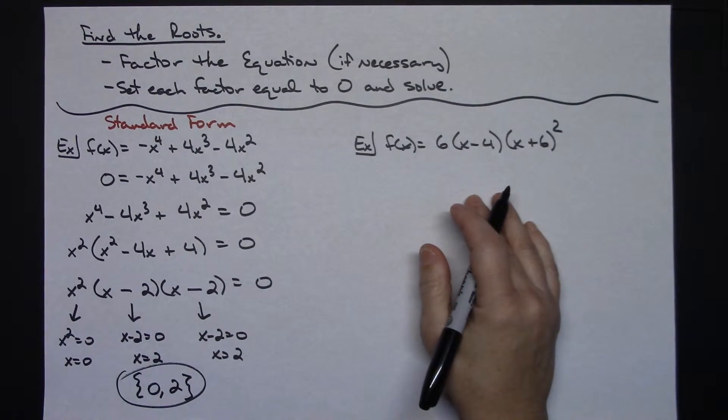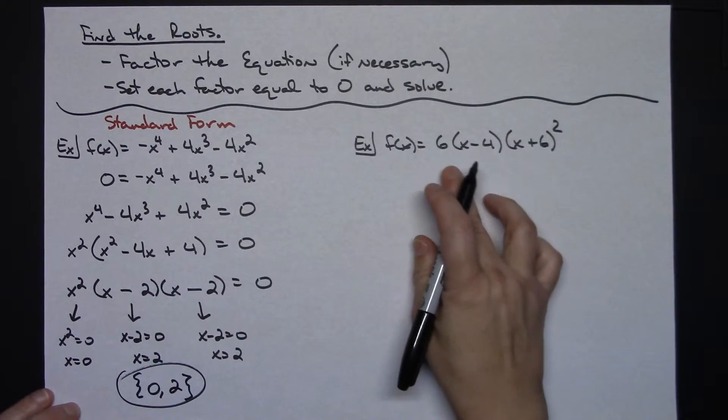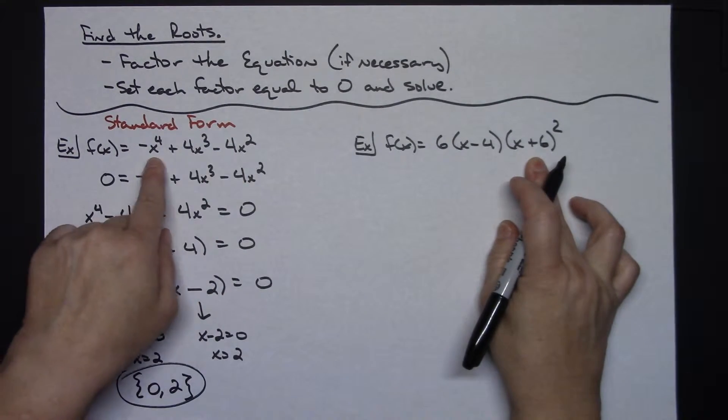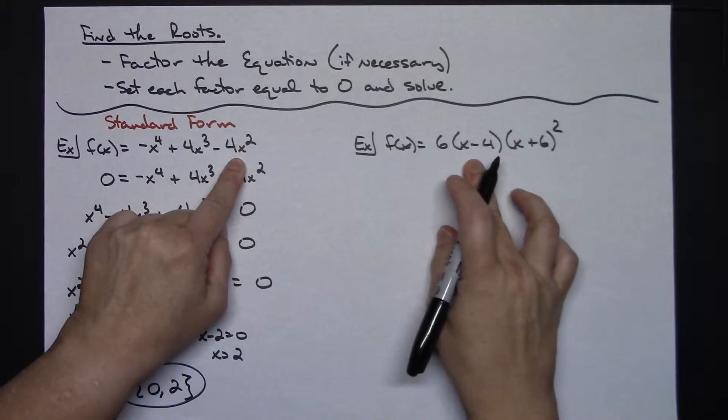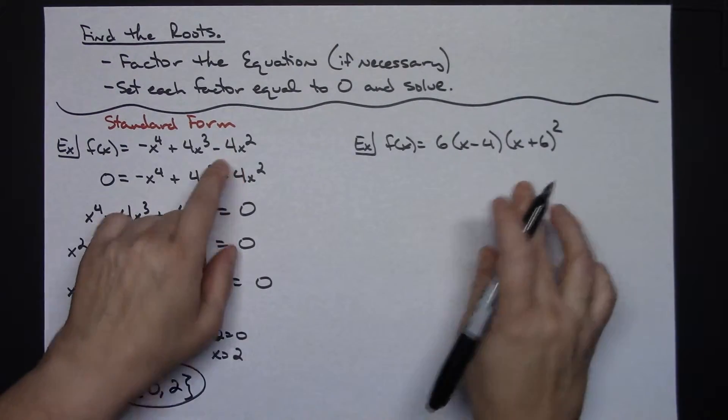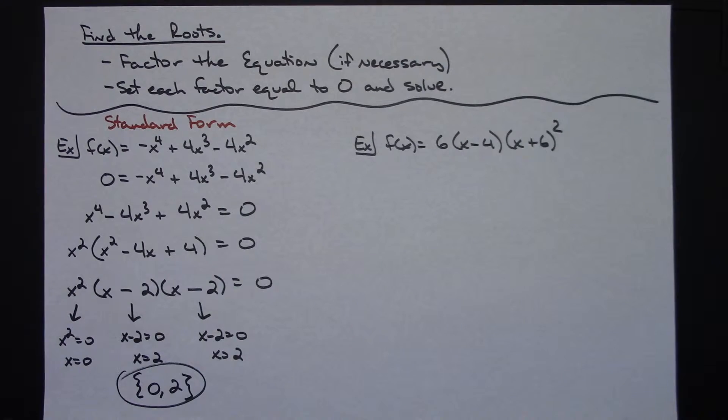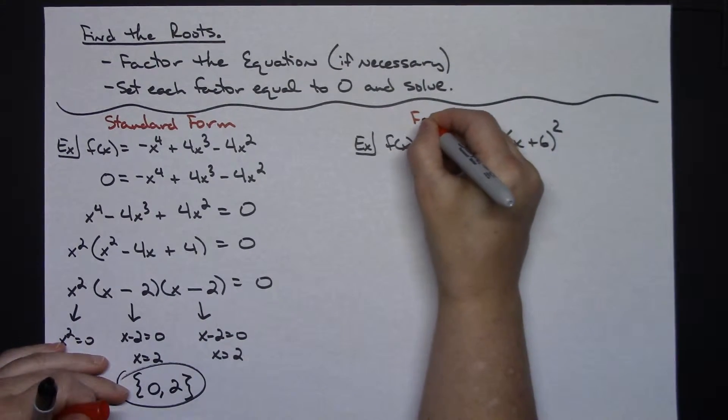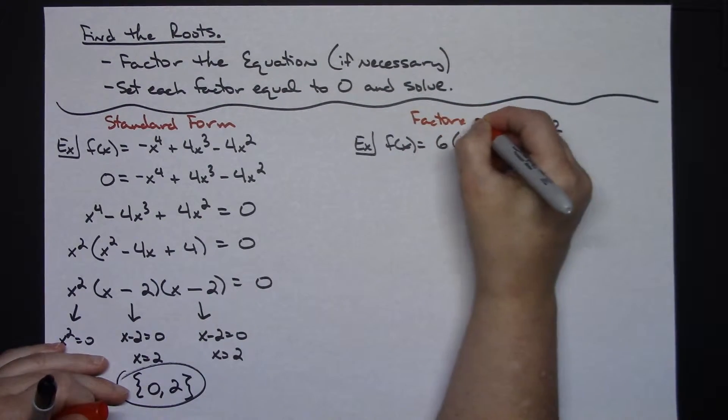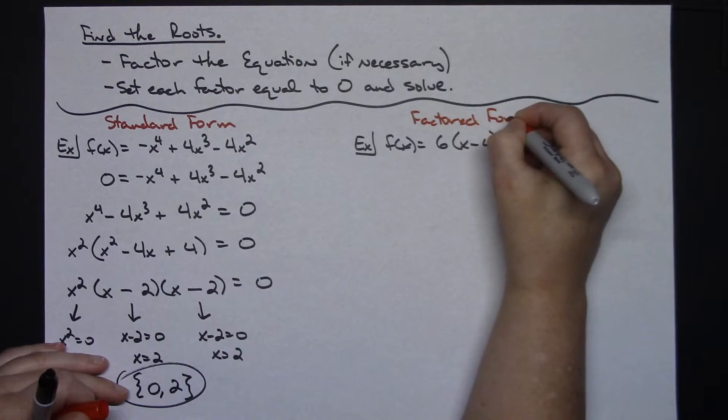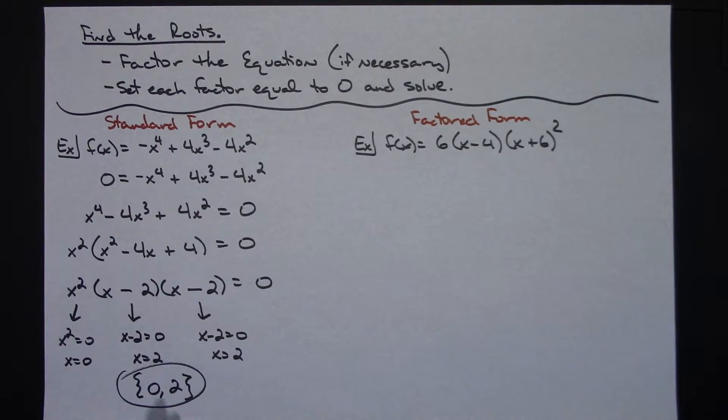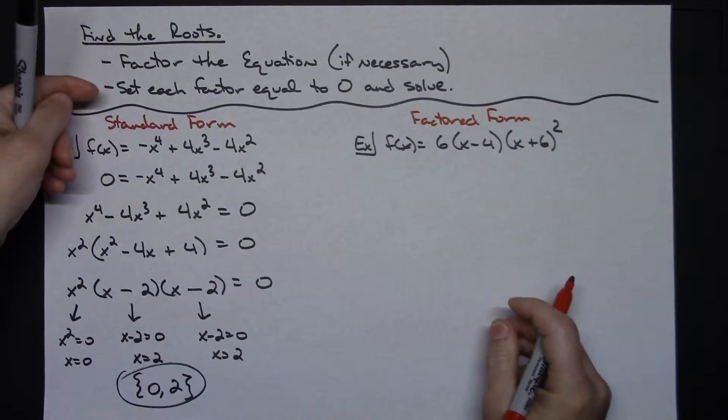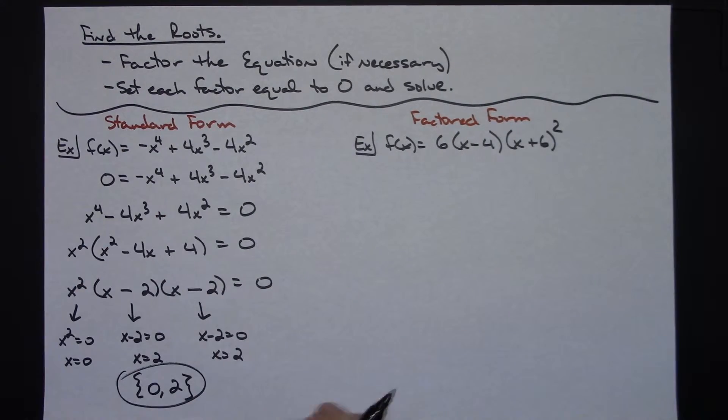Now if we take a look at this second example over here, this one does not look like this. This was in standard form. This has already been factored. If it's already in factored form, makes it a whole lot easier. So let's note that we are already in factored form. So if I'm already in factored form I don't have to do step 1 there. I only have to set each factor equal to 0 and solve.